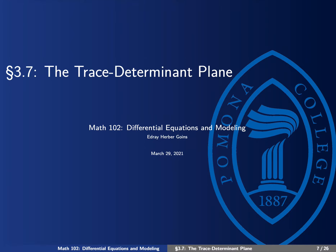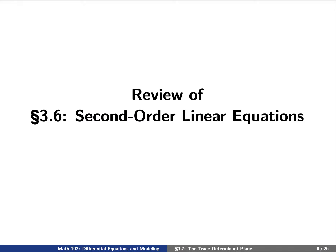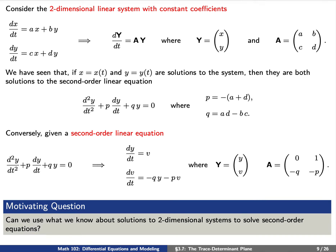We're going to talk about the trace determinant plane. Before we do so, let's review some ideas from before about solving second-order linear differential equations. Let's consider a two-dimensional linear system with constant coefficients. We can express this as dy/dt equals A times Y for some 2 by 2 matrix A having constant coefficients.